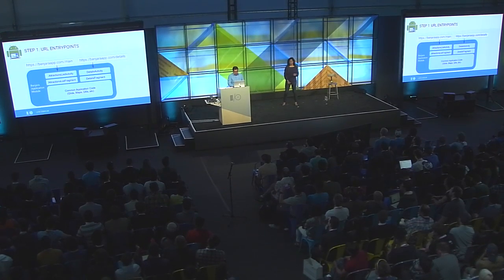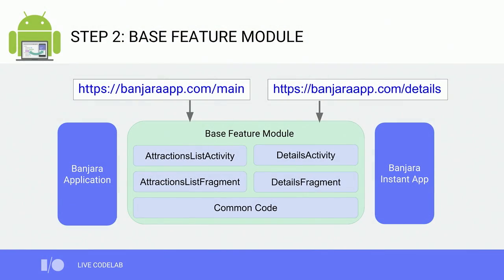We're done with step one and now have two experiences within our app discoverable through URLs. Let's move on to step two — we'll take our existing application module and put it in a base feature module. We'd rename our application to be a feature and change the Gradle file from com.android.application to com.android.feature. Since all the code will be within the feature module, we can introduce an application module and an Instant App module to build off the same feature module. Each of them don't need any code because they'll be building off the existing module.